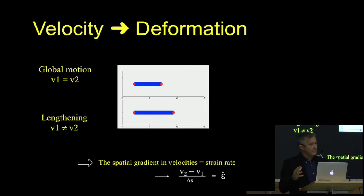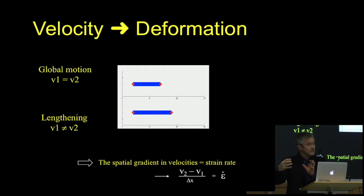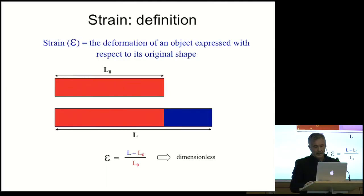That must mean there is deformation — the bar is getting longer. So if one velocity is faster than the other, and we study the differences in velocity, we can actually study how tissue between those two points is deforming — getting longer or shorter in one direction. That deformation is described with an engineering term, and that's strain. The definition is the deformation of an object with respect to its original shape.